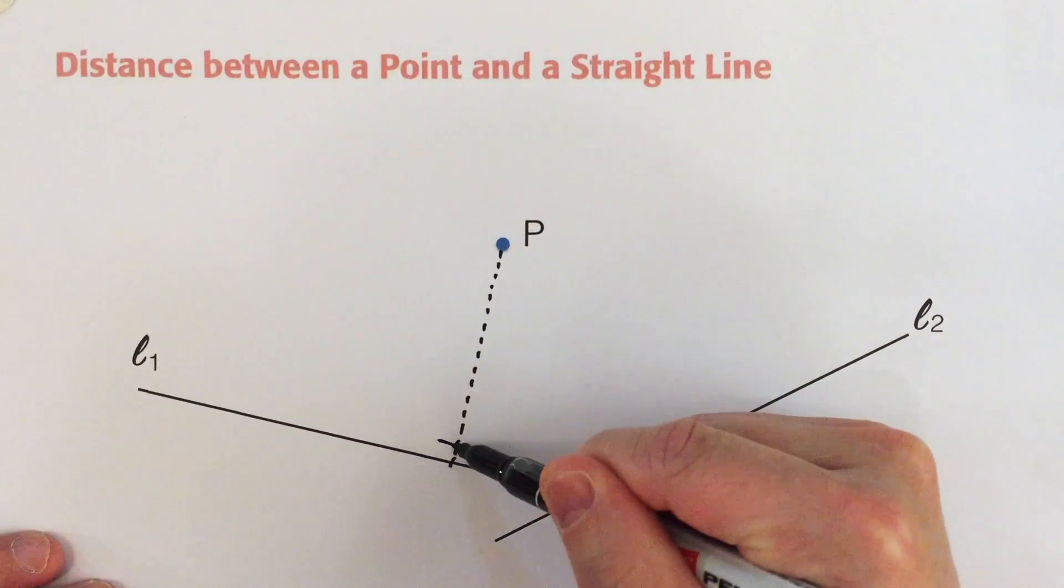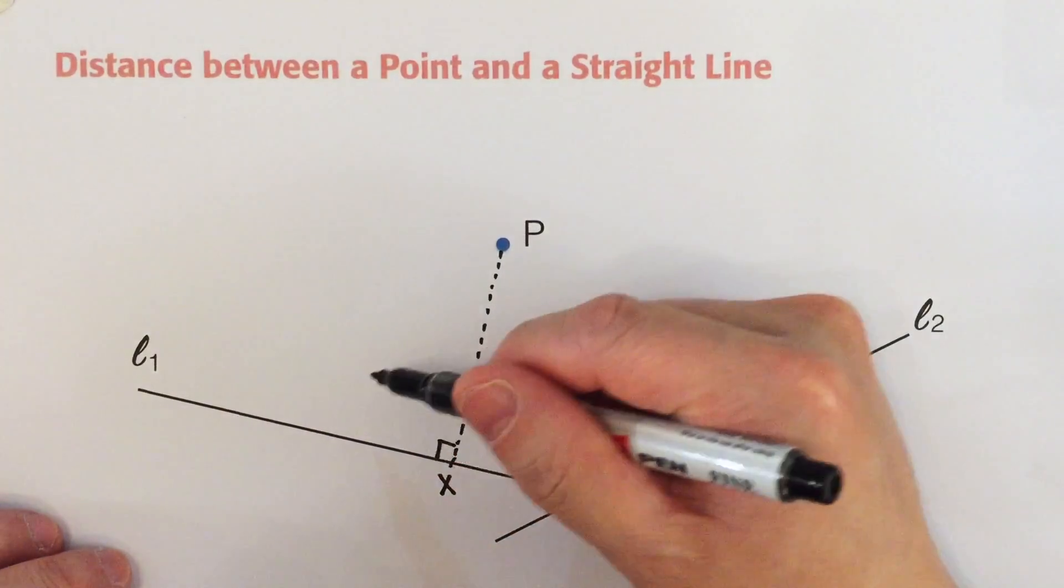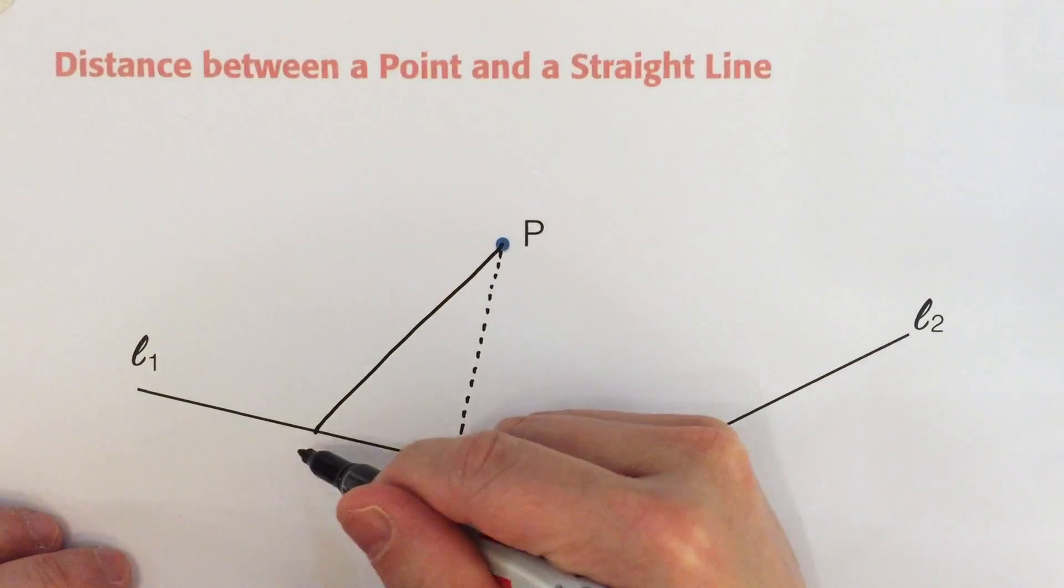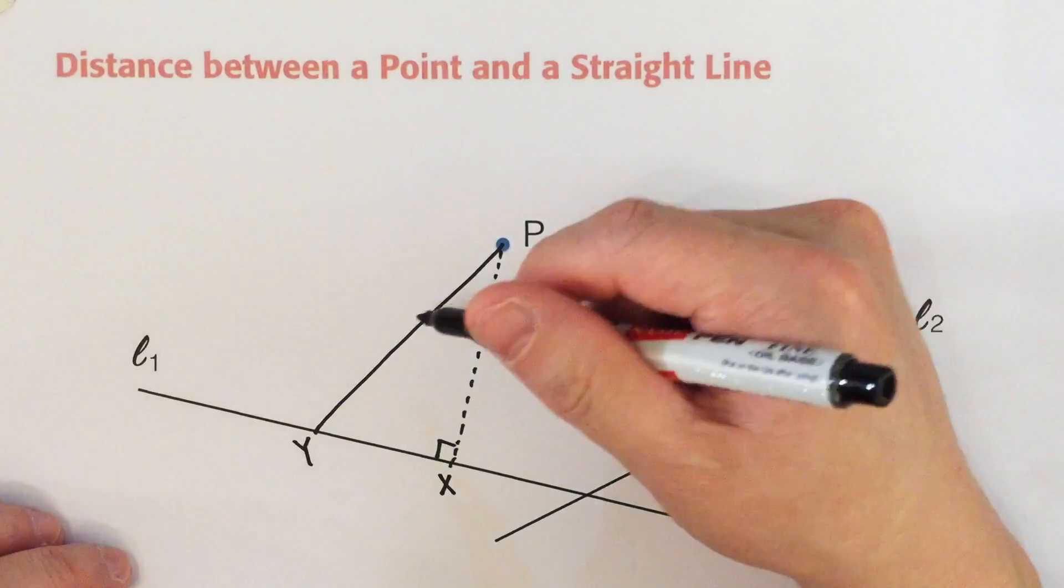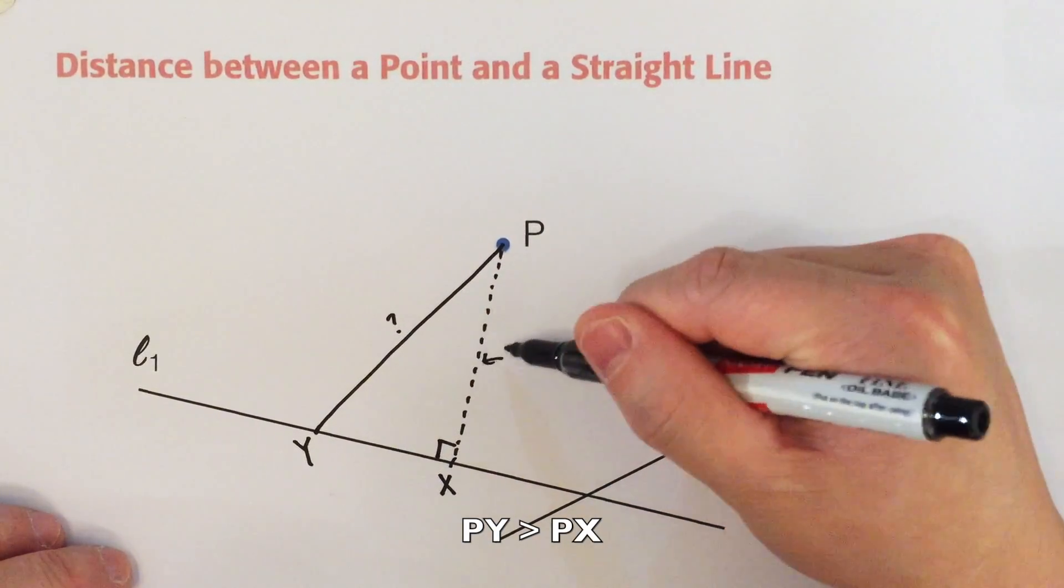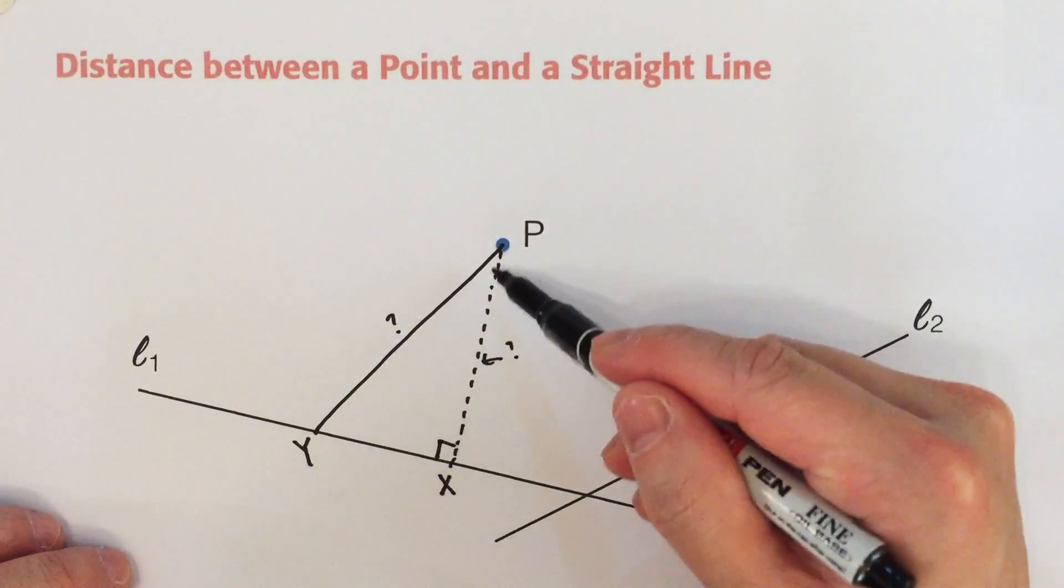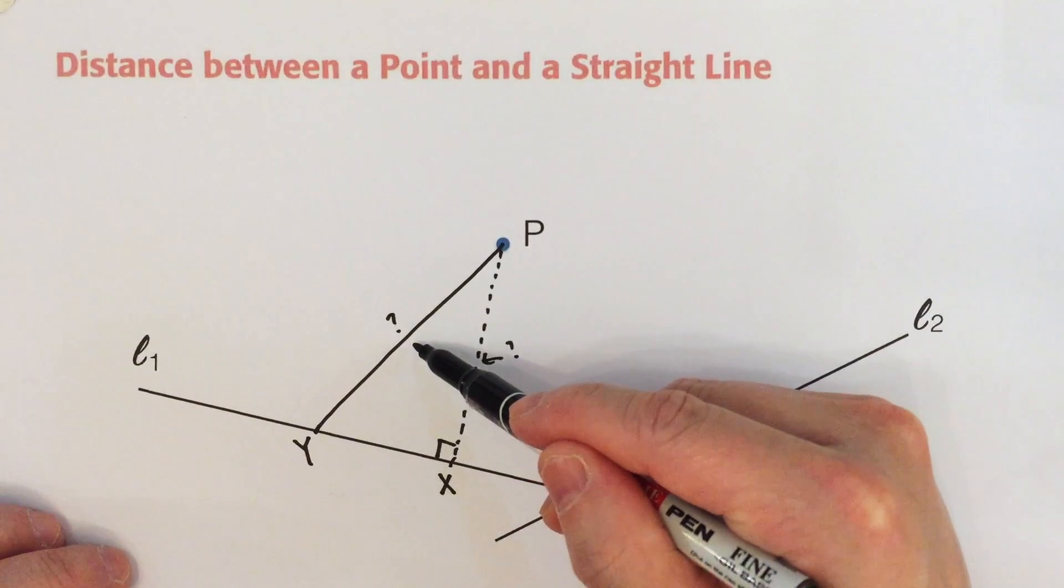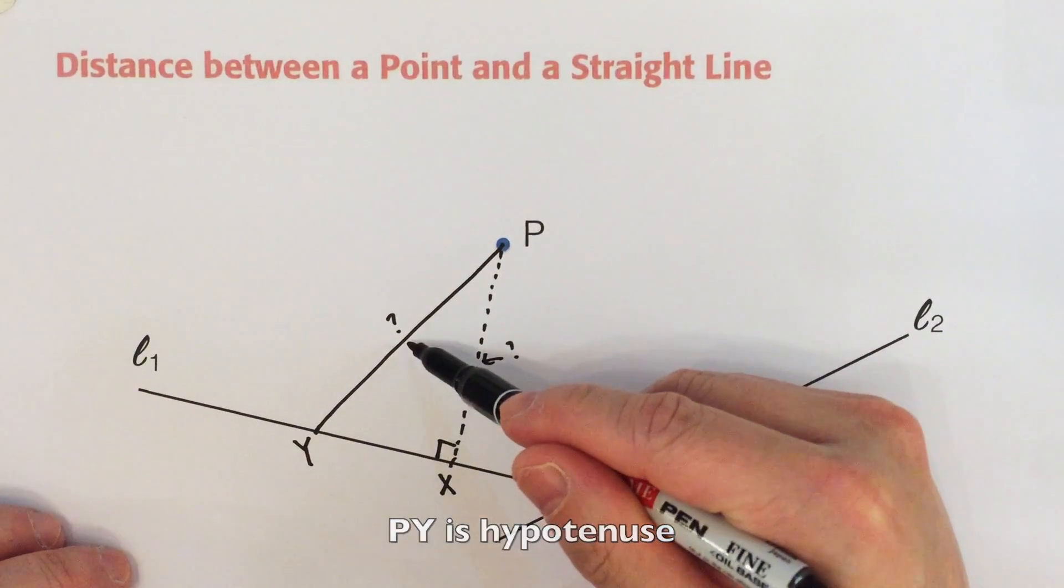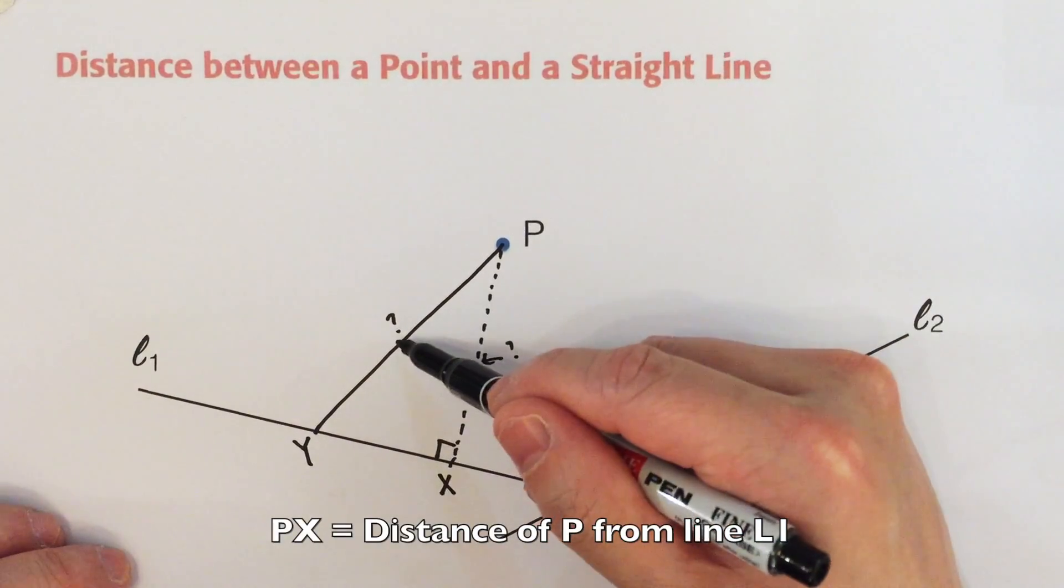Of point P from L1. Let's call this point X. Actually, we can draw some other line, for example we can draw another line like this. Then let us call this point Y, and of course this distance will always be greater than this one. Do you know why? Because PXY is a right angle triangle, and this will be the hypotenuse of the right angle triangle and it will have the longest length. So PX will be shorter.